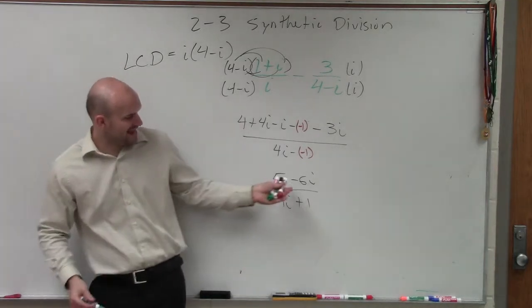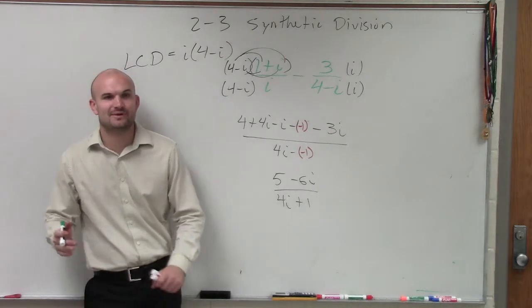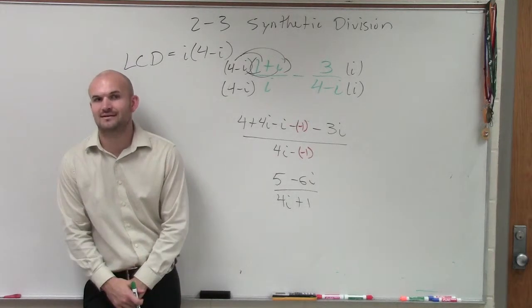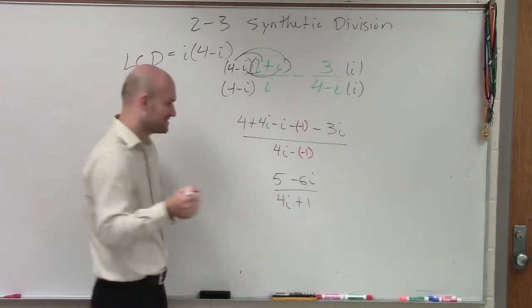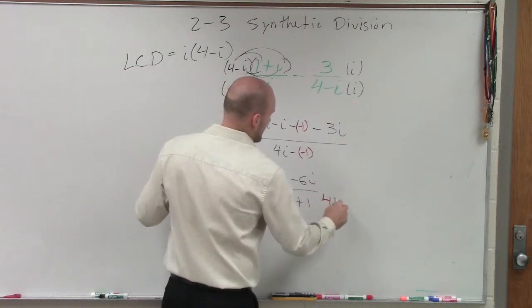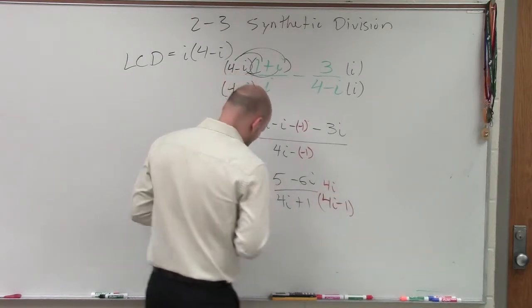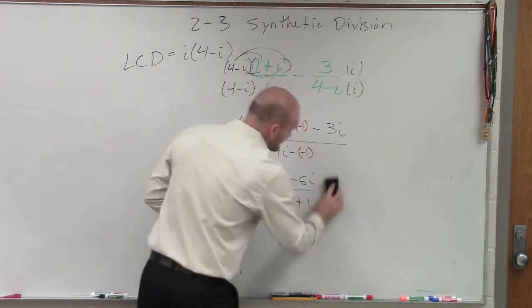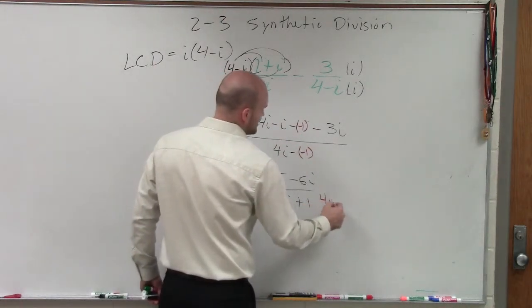Now, what happens when we have an expression with a binomial in this denominator? Now, we have to multiply by the conjugate. This is like an extra factor-out problem. So, you do four i minus one. No, no, no. Sorry about that. Big mistake. Why is four i minus one not the conjugate?